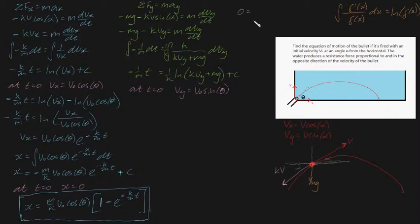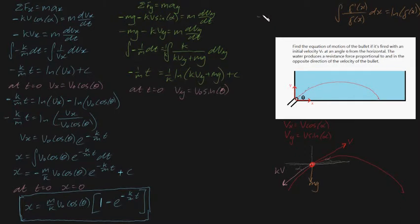So on the left-hand side, we'll get 0. And on the right-hand side, we'll get, well, let's see, 1 on k times by log of v0 sine theta. In fact, I might not have enough space. Let me just make some space here. We know that 0 is going to be equal to 1 on k times log of kv0 sine theta plus mg plus c.